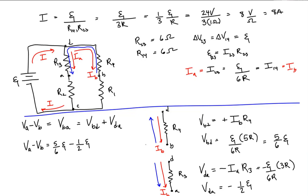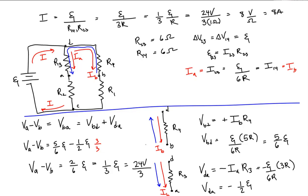Putting it together: the potential from B to A equals the potential from B to D, which is five-sixths times the EMF, plus the potential from D to A, which is minus one-half times the EMF. Getting a common denominator of six: five-sixths minus three-sixths equals two-sixths, which simplifies to one-third times the EMF of the battery. Since the battery EMF is 24 volts, divided by three, the potential from B to A equals 8 volts when the switch is open.